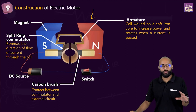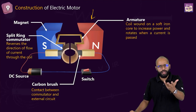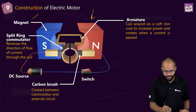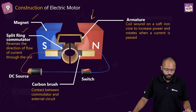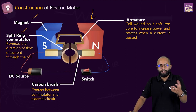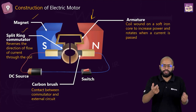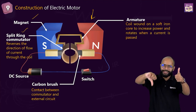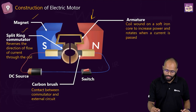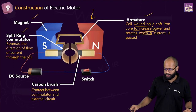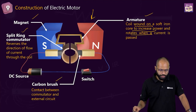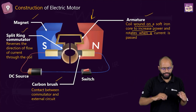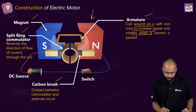Construction-wise, this is a simplistic diagram of a motor — two magnets, and in between there's a coil, sometimes called armature. There's a split ring commutator; its function is to reverse the direction of flow of current through the coil, because otherwise the coil would just oscillate. On one side of the coil, the force is always upward; on the other, it's always downward. Armature coil is wound on a soft iron core to increase power. Carbon brushes complete the contact with the external circuit.